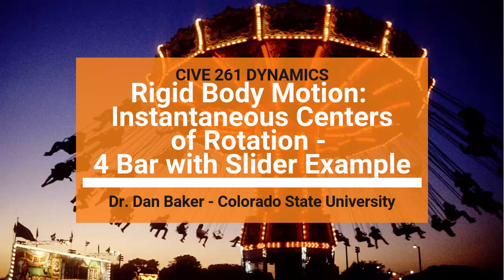And the problem we're going to work today is actually a problem we'll work with instantaneous centers of rotation, which is the same thing as an instantaneous center of zero velocity. I like the ICR notation better because it describes what these points are. The bodies are rotating around a single point, at least for an instant.